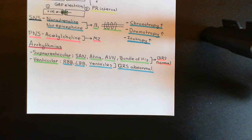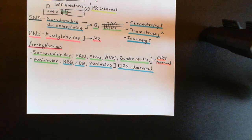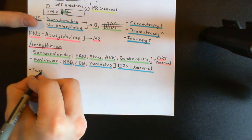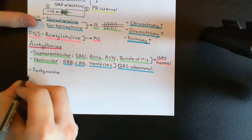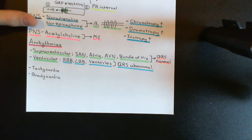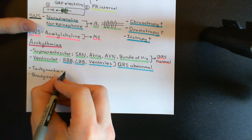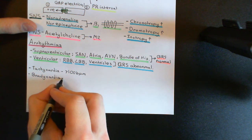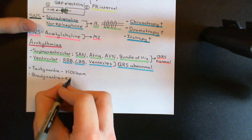Now, usually cardiac arrhythmias are going to lead to a change in the rate at which the heart is actually beating. The two options are that the rate can either go down or go up. So here is another broad way to classify arrhythmias into tachycardias and bradycardias. The definition of tachycardia is that your heart rate is greater than 100 beats per minute, whereas the definition of bradycardia is that your heart rate is less than 60 beats per minute.